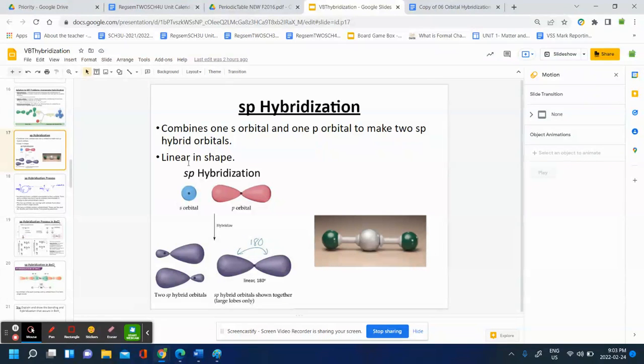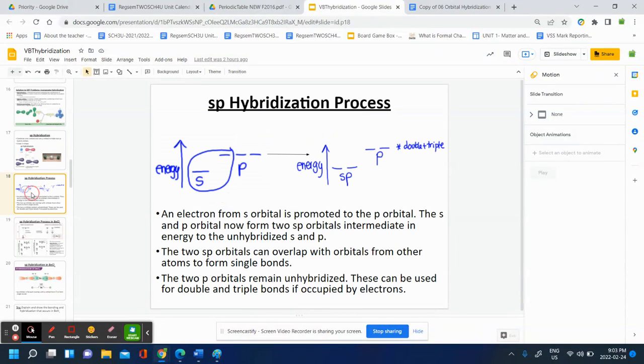We can see SP hybridization is made from an S and a P orbital coming together, and that makes two hybridized orbitals, the SP and SP here. When you draw them together combined here, that makes 180 degree bond angle. And this is how you would show that promotion process.